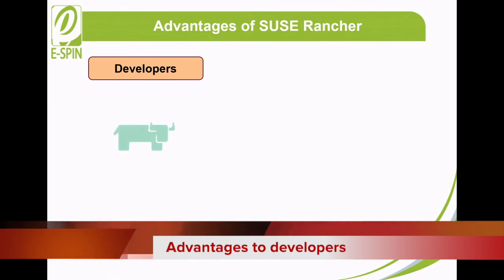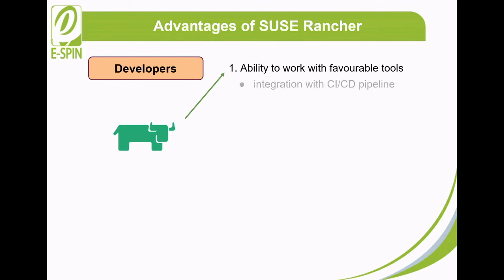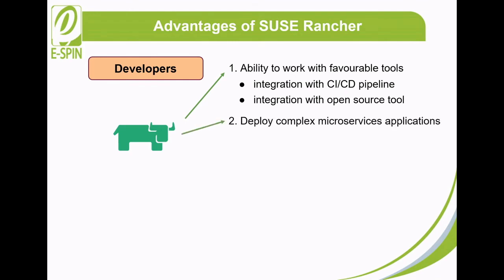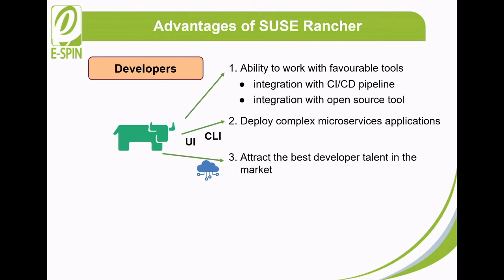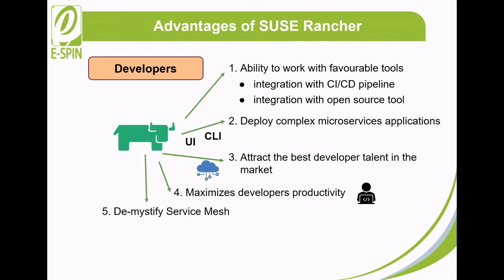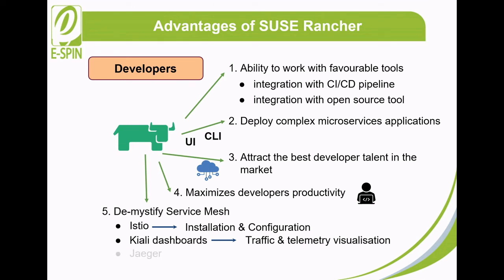For developers, with SUSE Rancher, developers can work with their favored tools — for example, integration with CI/CD pipelines like Jenkins, or open-source tools such as Prometheus and Grafana. Developers are able to deploy complex microservices applications easily using the powerful UI and CLI in SUSE Rancher. SUSE Rancher is built on cloud-native technologies, which helps enterprises attract the best developer talent in the market. SUSE Rancher maximizes developers' productivity. Since cluster deployment and management is automated and immutable across clouds, developers can focus on writing code without worrying about the infrastructure. SUSE Rancher also simplifies the installation and configuration of Istio, and includes Kiali dashboards for traffic and telemetry visualization and Jaeger for tracing.